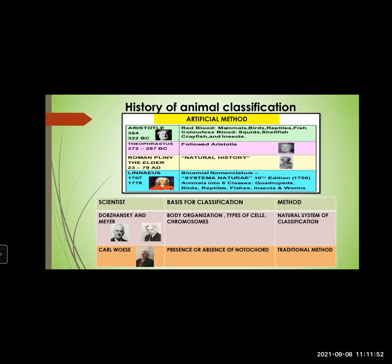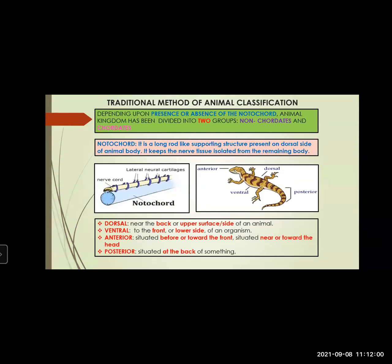Now let us discuss the traditional method of animal classification. The traditional method was based upon presence or absence of notochord. This criterion was used for doing the animal classification, and based on this characteristic, animal kingdom was divided into two groups: non-chordates and chordates.